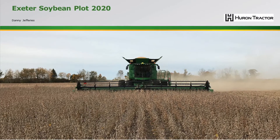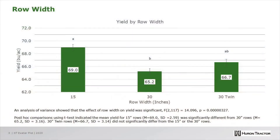Let's now look broadly over the plot to see how the row width treatments differed. This figure shows 15-inch row yields on the left column, 30-inch rows in the center, and 30-inch twin rows on the right. Across all population treatments, the 15-inch rows did significantly out-yield the 30-inch rows; however, the 30-inch twin rows did not differ from either treatment.